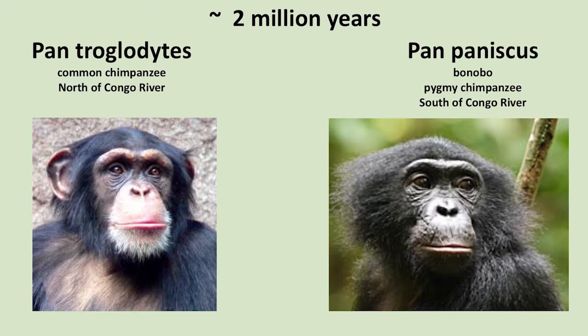For example, these are chimpanzees. On the left, we have Pan troglodytes — Pan is the genus, troglodytes is the species, also known as the common chimp. On the right, we have Pan paniscus, the lesser known bonobo. And they diverged from each other about two million years ago. So that's what two million years of independent evolution will do.